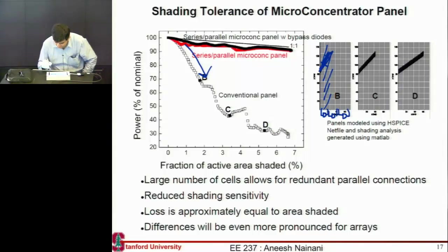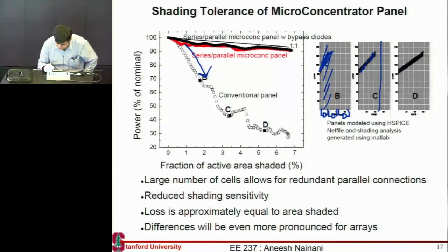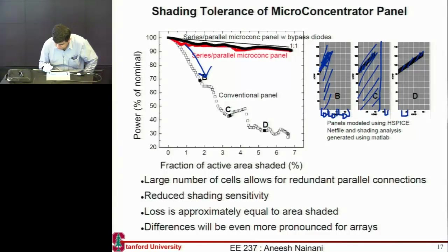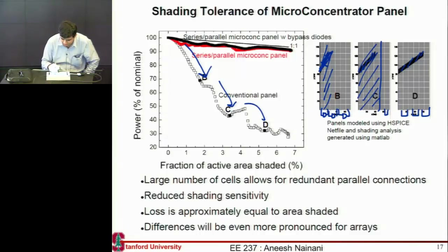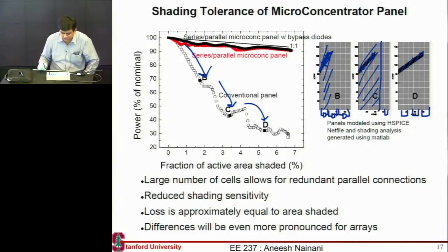Similarly, if the shade covers more rows, two-thirds of the panel turns off but one third still operates. However, if the shading pattern is such that none of the bypass diodes can provide any relief, efficiency will drop completely and be very low.